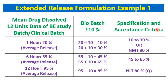At 6 hours, the drug release is 55%. Applying the plus or minus 10% criteria gives a range of 45% to 65%. At 12 hours, the release is 95%. As with the IR formulation dissolution specification, you can apply that criteria at the end phase: 95 minus 10 equals 85%, and you can simply give the specification as not less than 80% release.